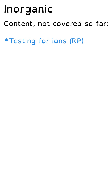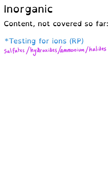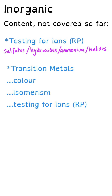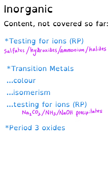Paper 3 normally has quite a significant practical element. My first prediction for inorganic topics is the testing for ions required practical. This includes sulfate ions, hydroxide ions, and the different halide ions using silver nitrate, acidifying it to remove those carbonate impurities. From the transition metals topic we haven't had anything about colour or isomerism so far, and very little about the testing for ions required practical.